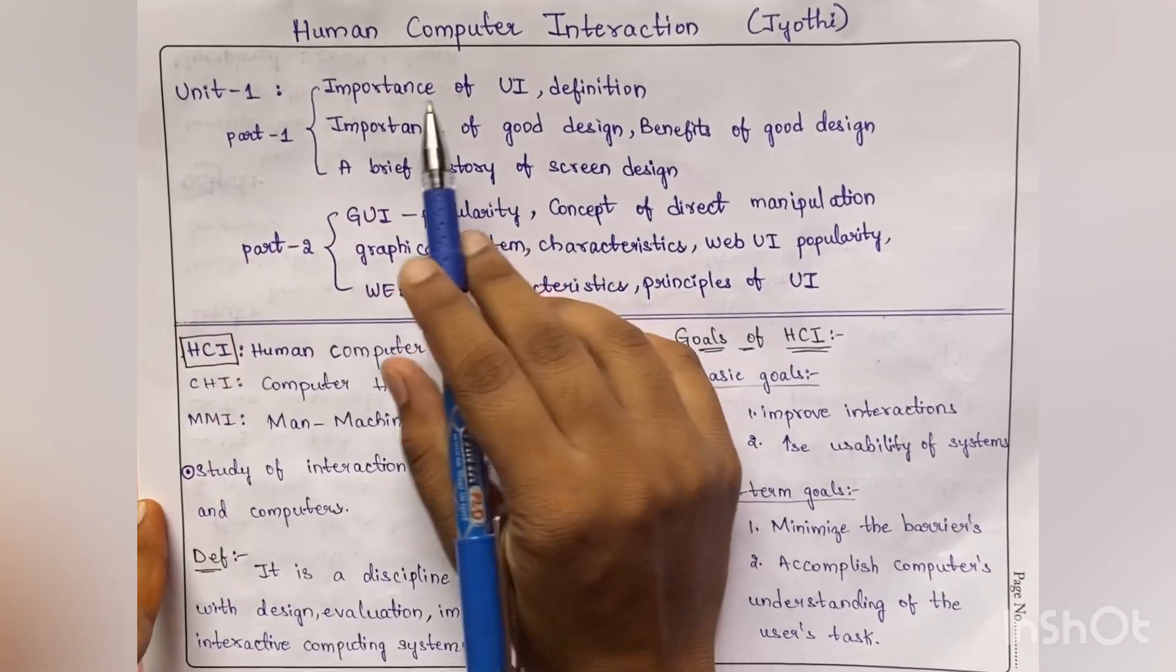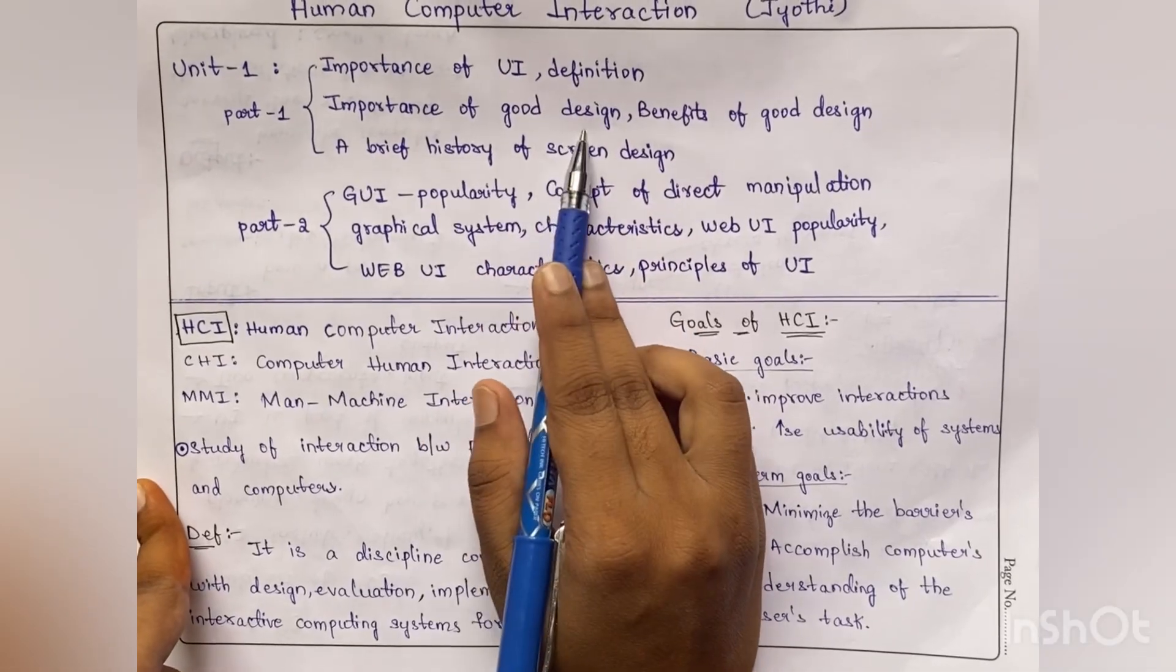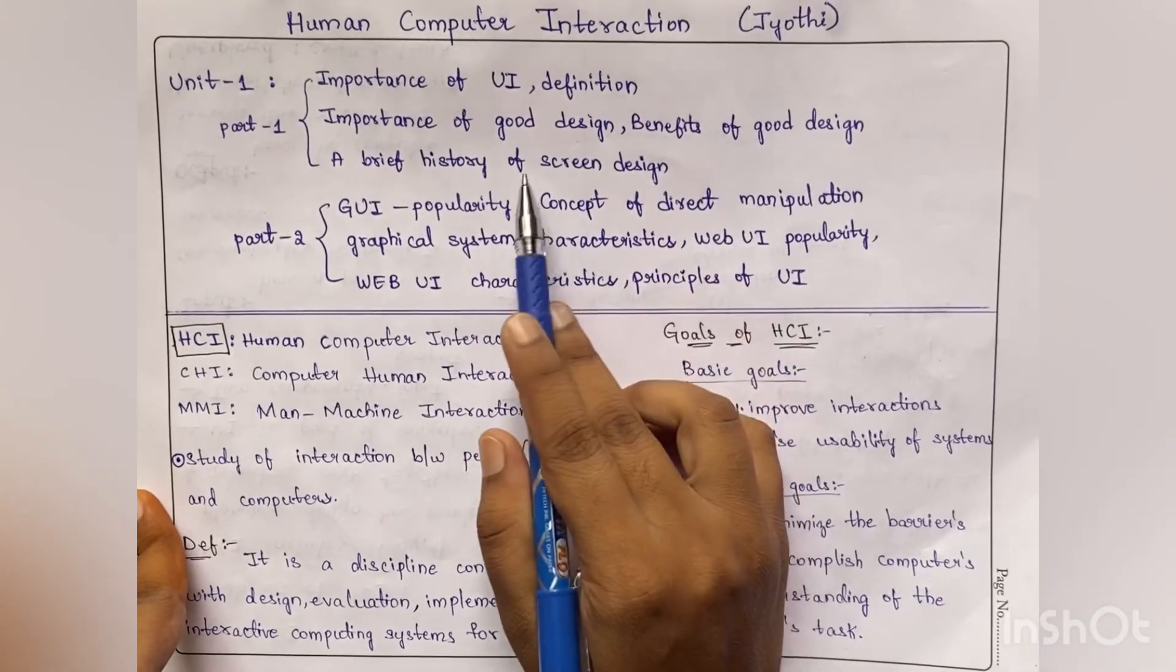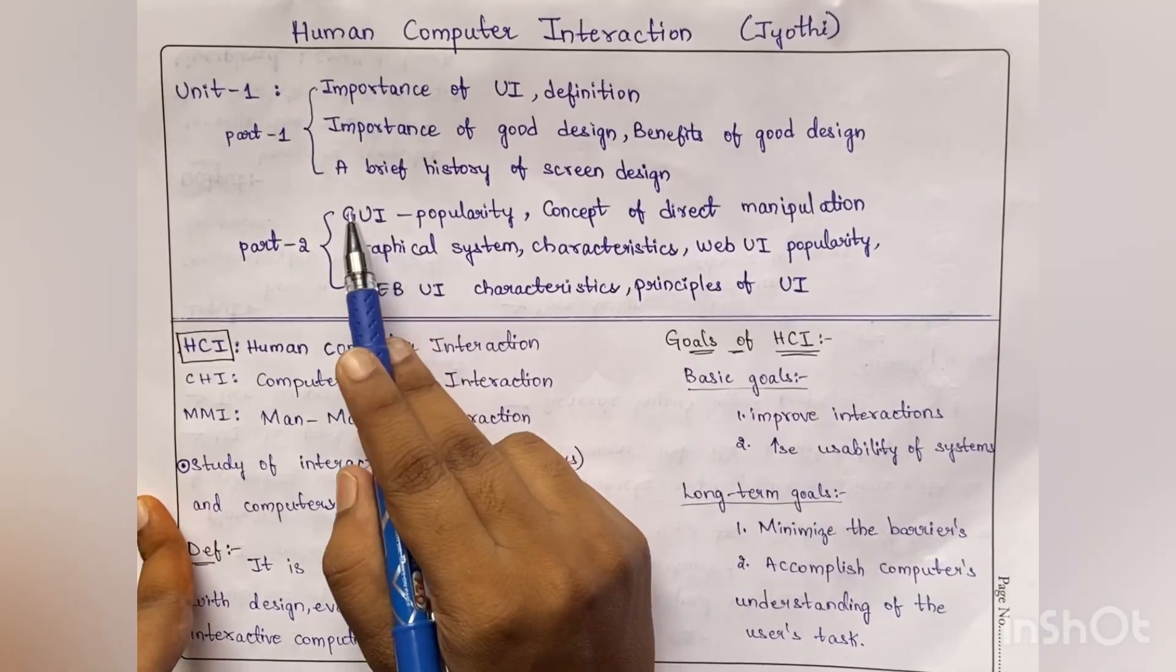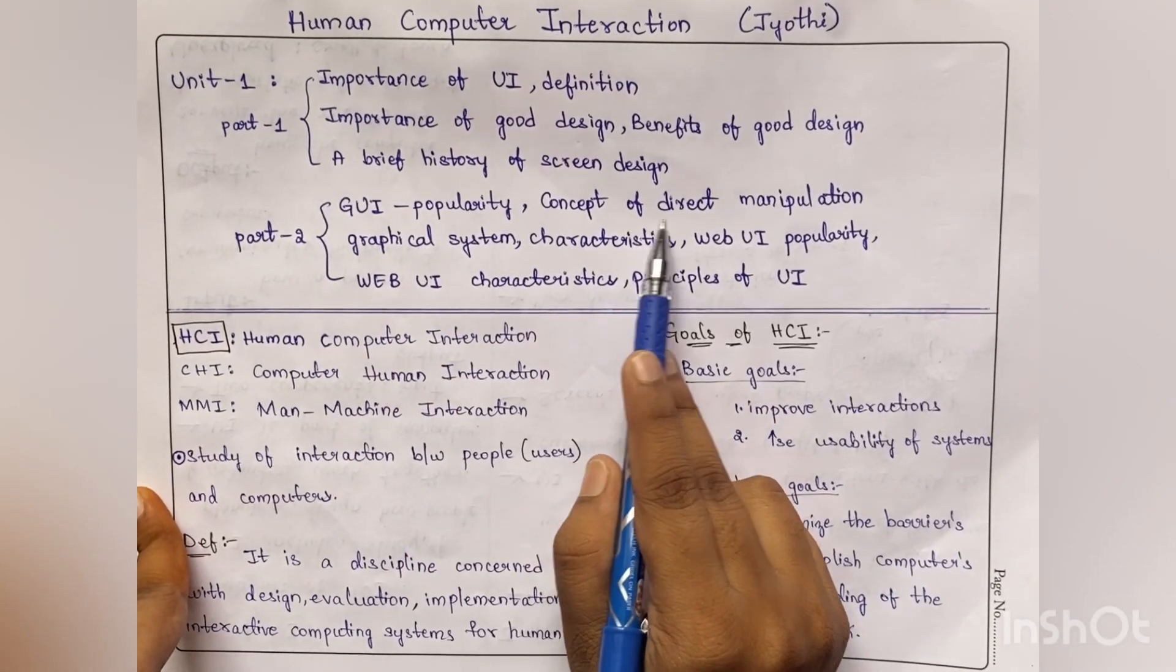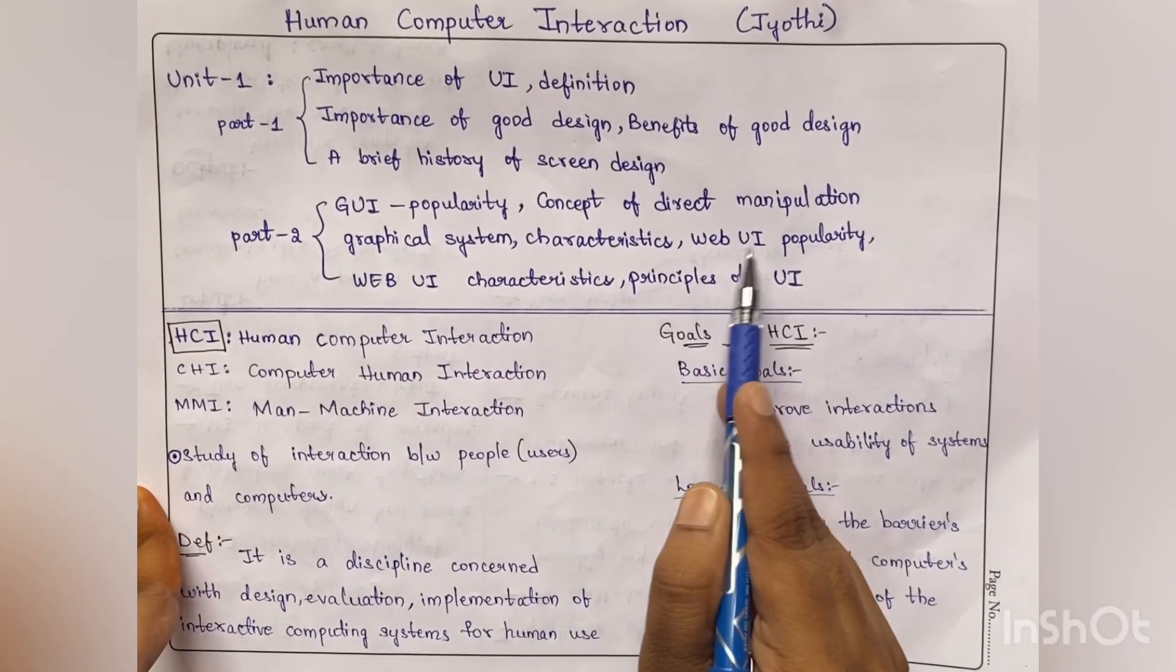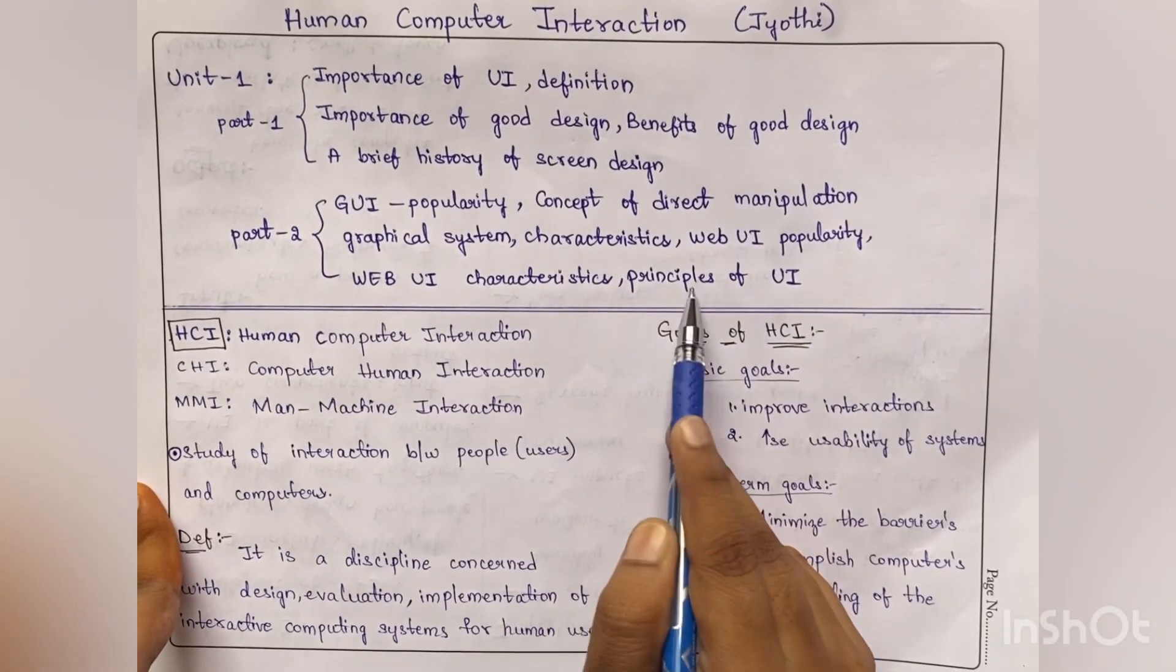In unit one, we need to cover importance of user interface, its definition, importance of good design, its benefits, history of screen design. In the second part we have GUI popularity and concept of direct manipulation, graphical system characteristics, web UI popularity, its characteristics and its principles.